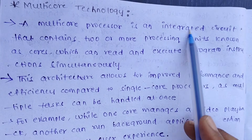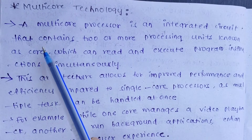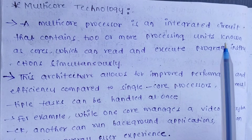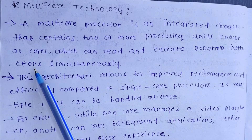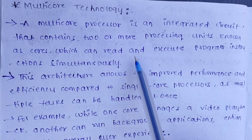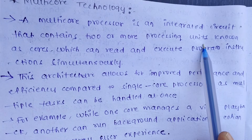Two or more processing units are used, and these cores are used to execute program instructions simultaneously — meaning read and execute at the same time.